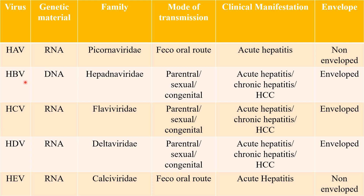Hepatitis B virus is a DNA virus belonging to the Hepadnaviridae family. The mode of transmission of Hepatitis B can be parenteral, through sexual route, or congenital. Parenteral means through the use of IV needles — for example, IV drug users who share the same needle. If any one of them is infected with HBV, everyone is at high risk. Transmission also occurs through sexual contact, mostly in high-risk groups, and congenital transmission from infected mother to fetus is also possible.